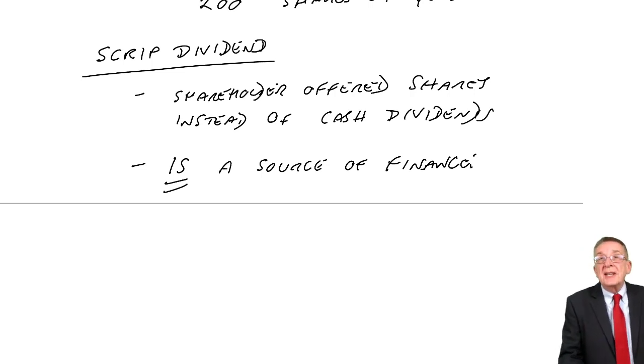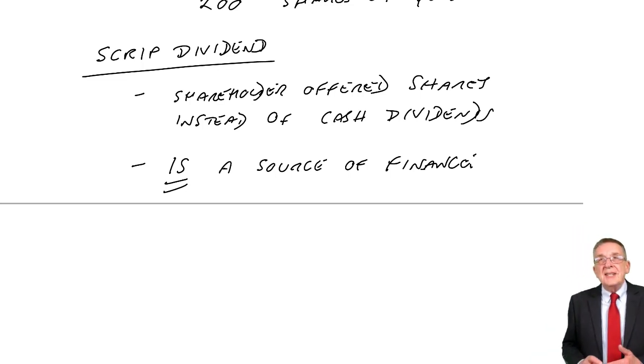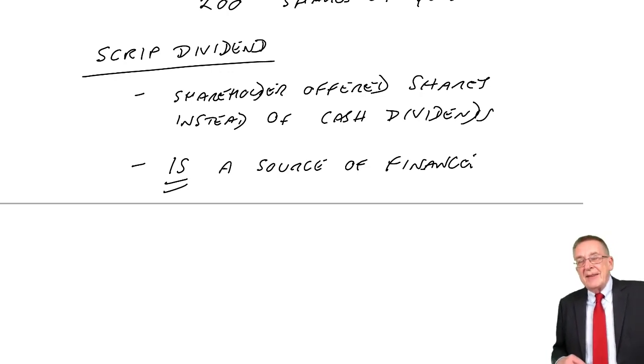The company wants to raise money. Well, they could then have a rights issue and say, will you buy some new shares and give us $1,000? Well, with a scrip dividend, none of that hassle. They just say, instead of taking the cash, please will you, in a sense, buy some new shares. And we'll keep the $1,000, and we can use it to expand, to invest in the company. So in that sense, it is a source of finance.